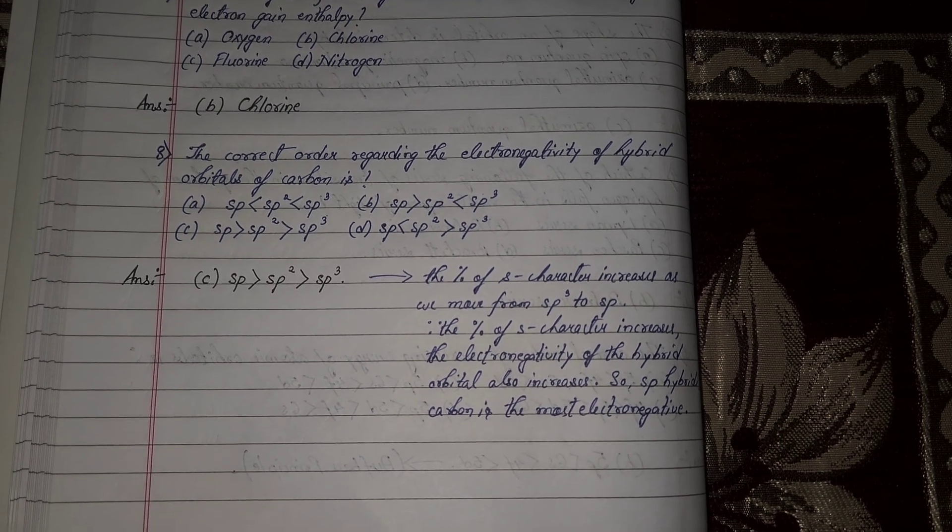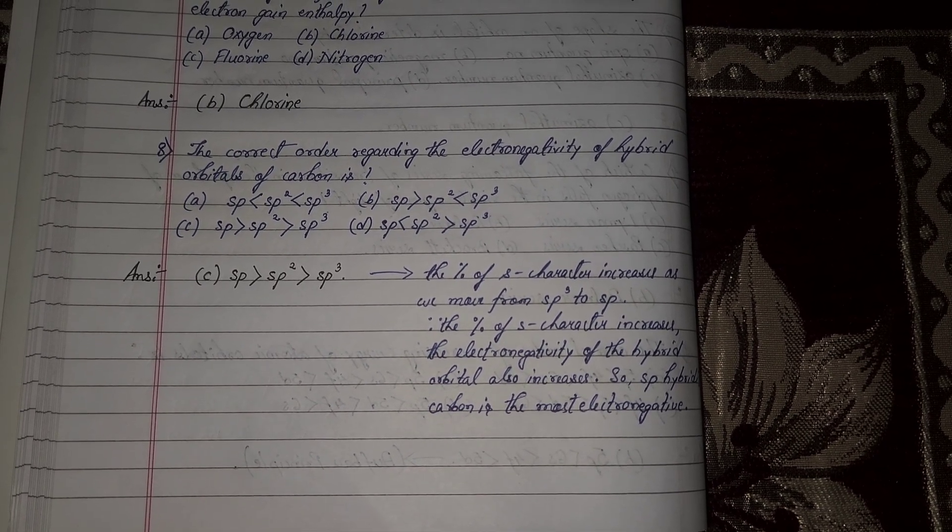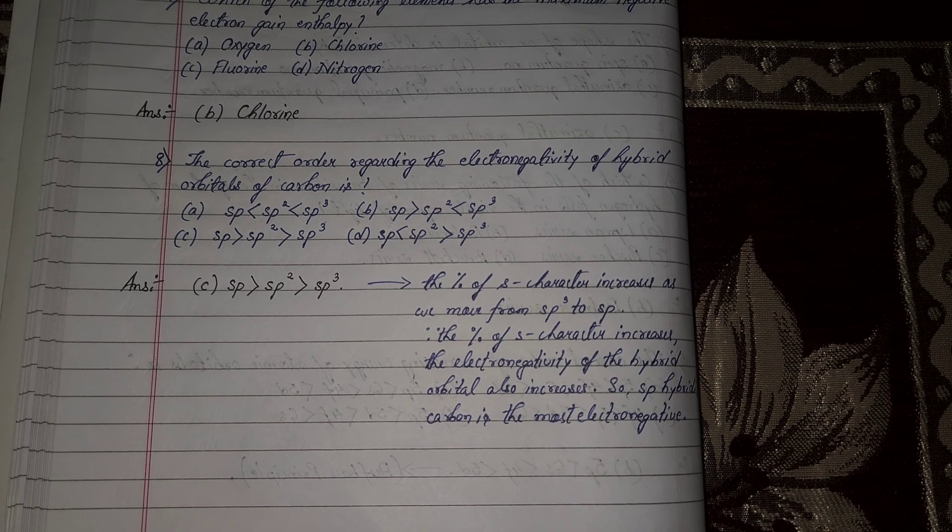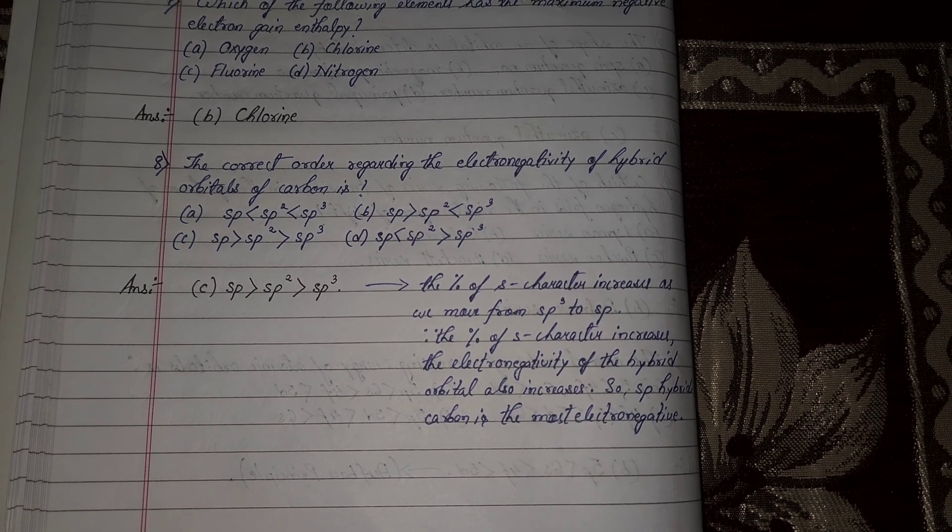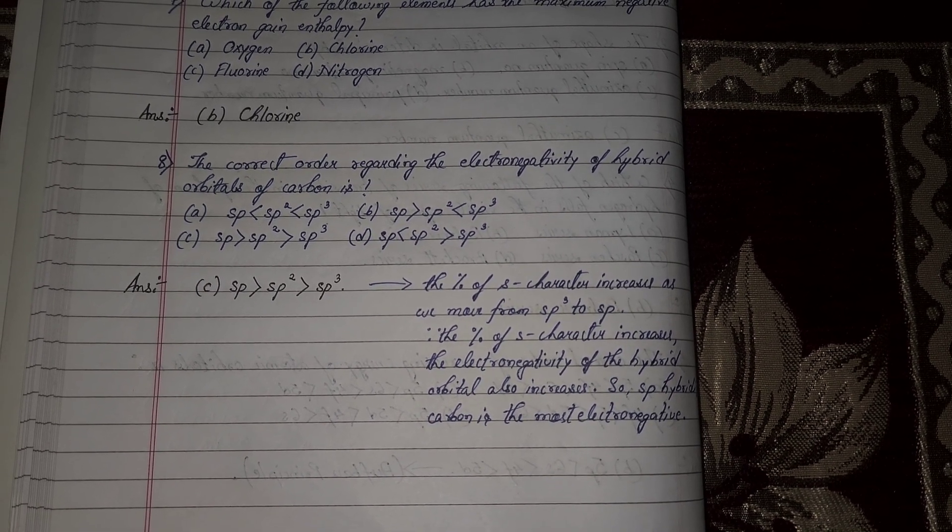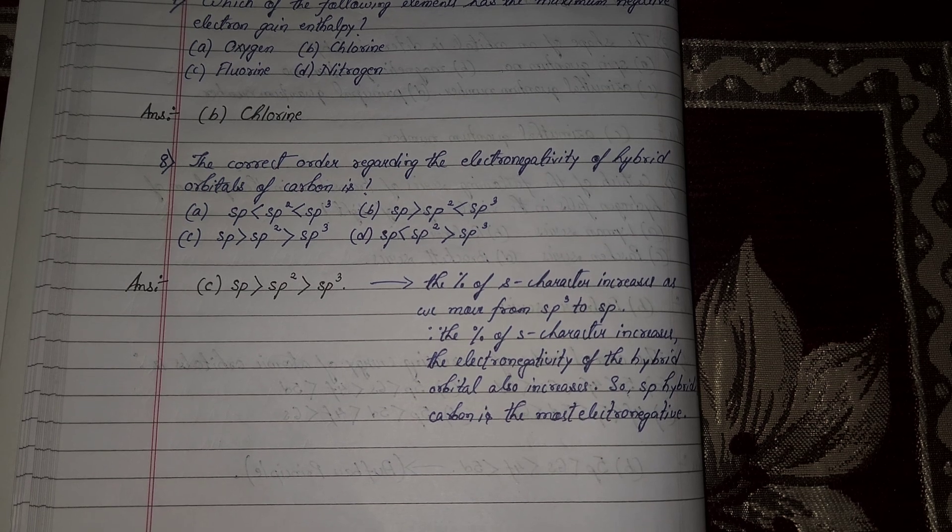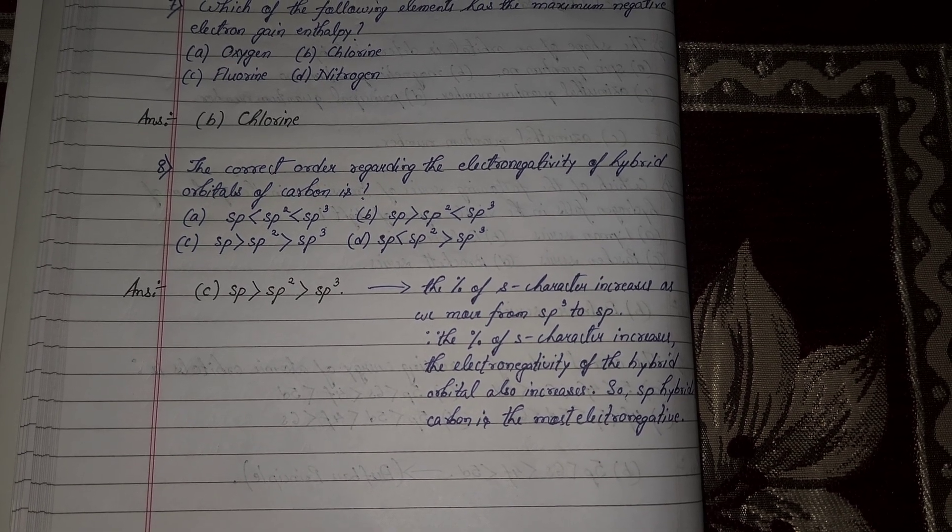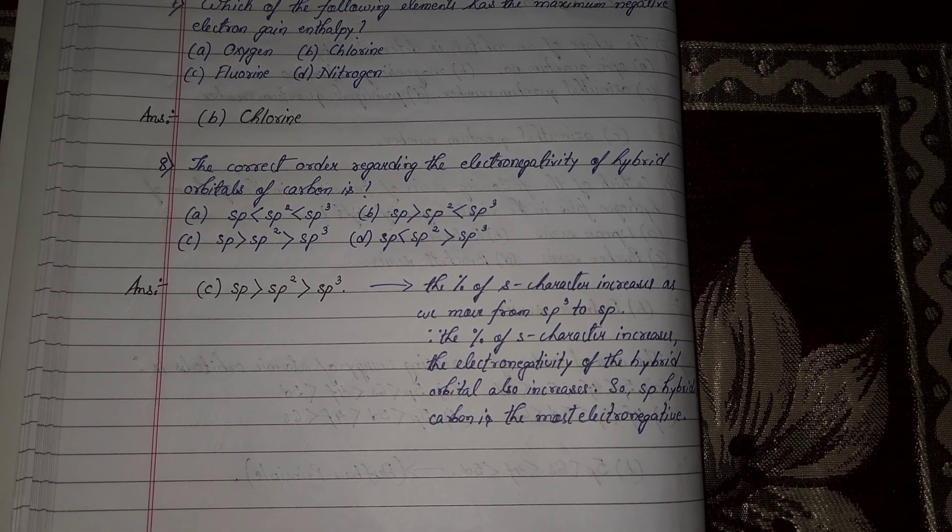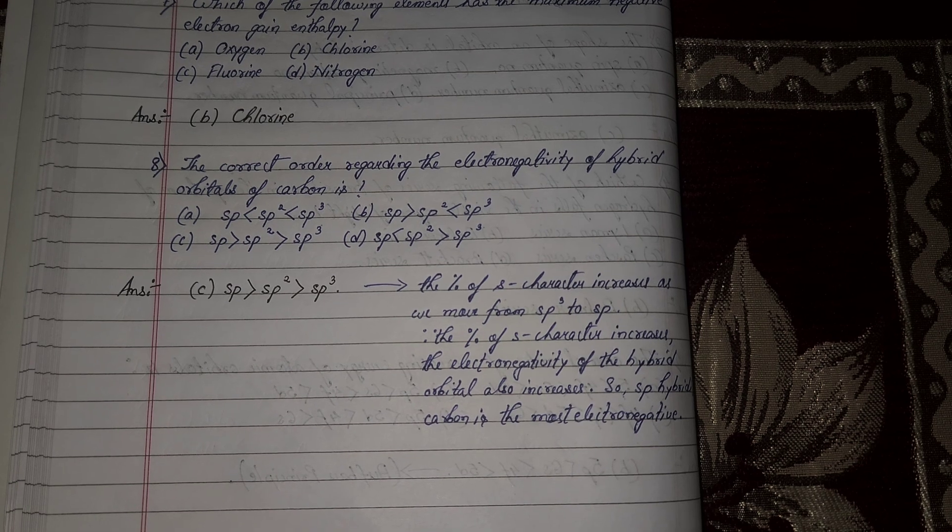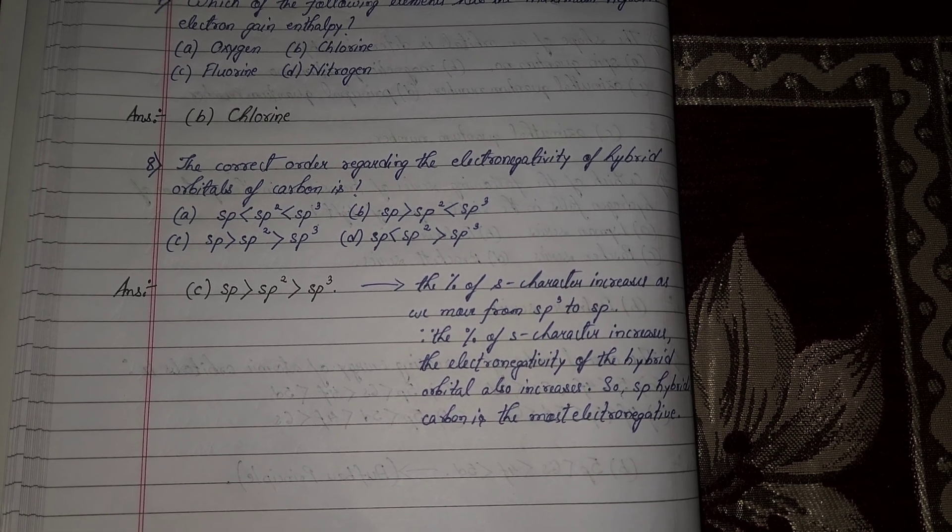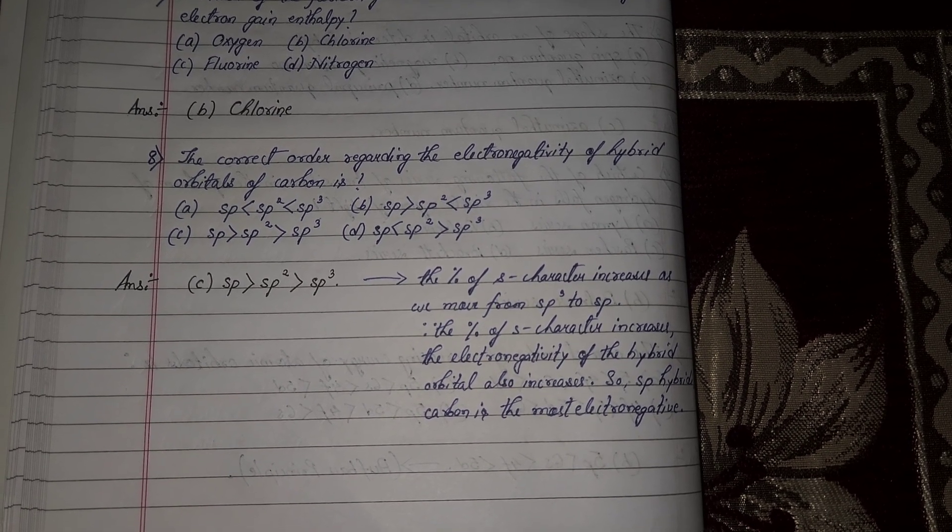If you look at S character percentage, this will increase. SP hybridized carbon is most electronegative.